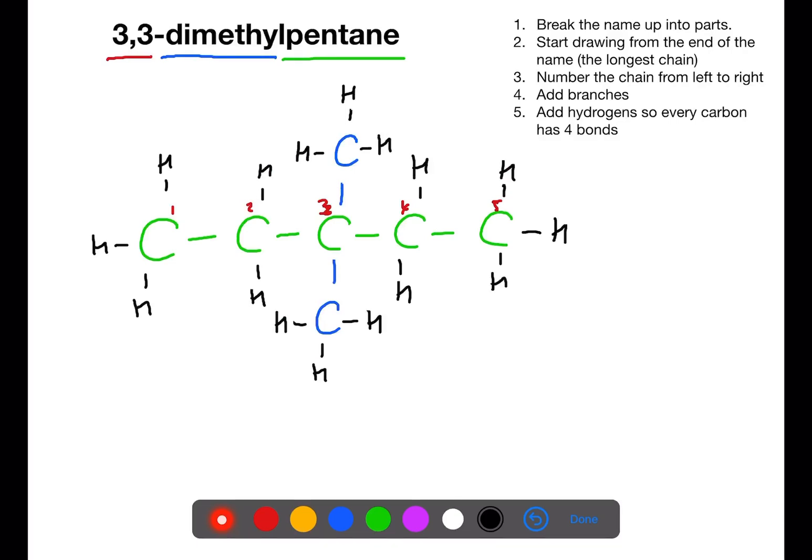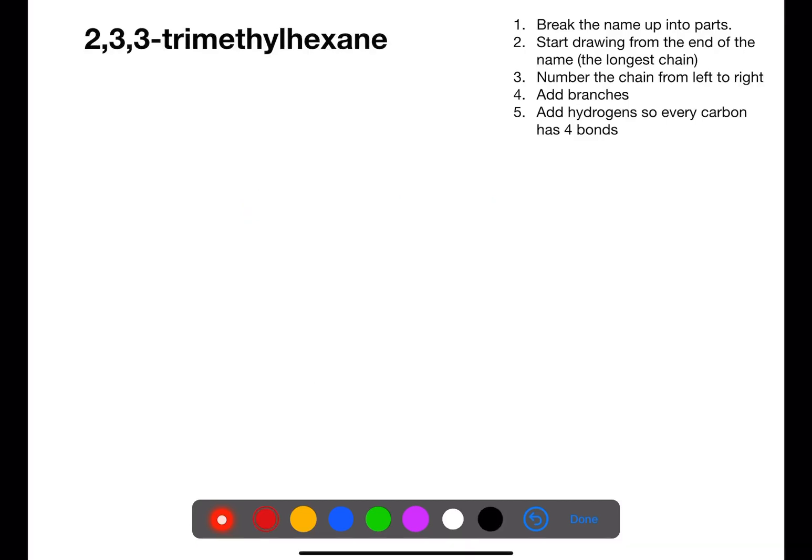Let's look at one final example. Here we have three numbers. We have trimethyl for branches and hexane. Hexane has six carbons and we're going to number from left to right.